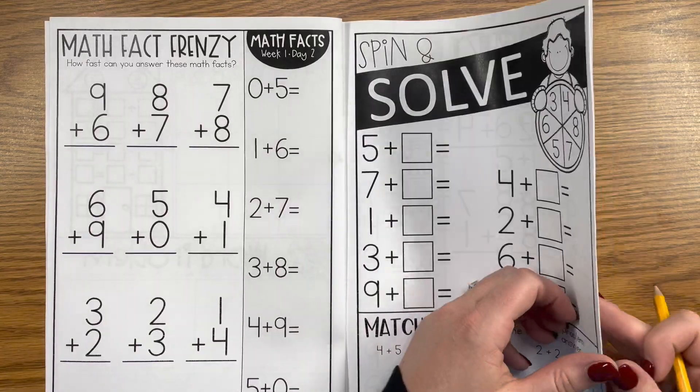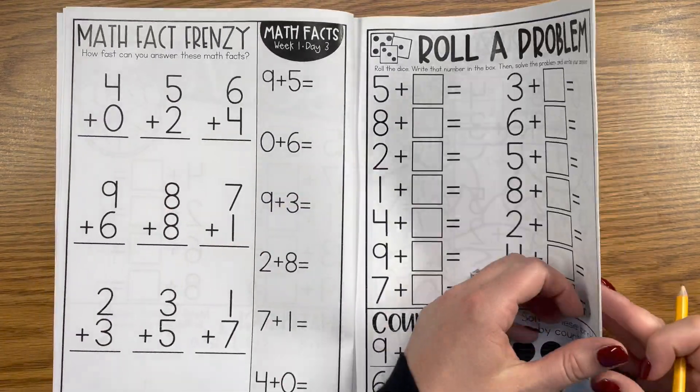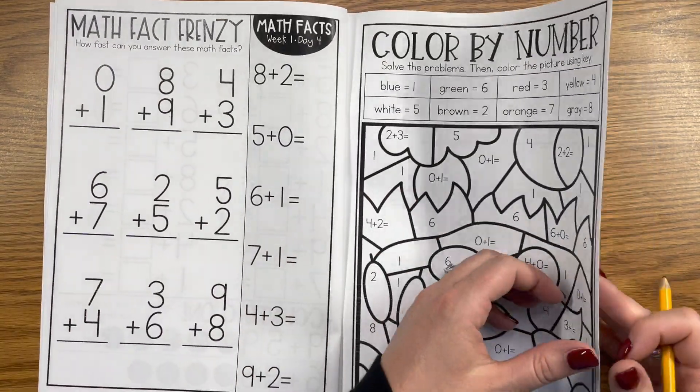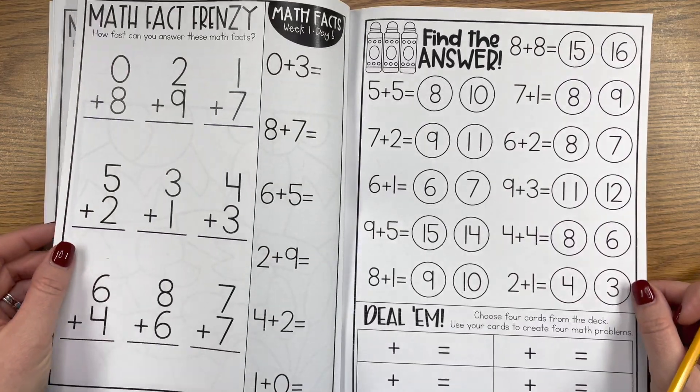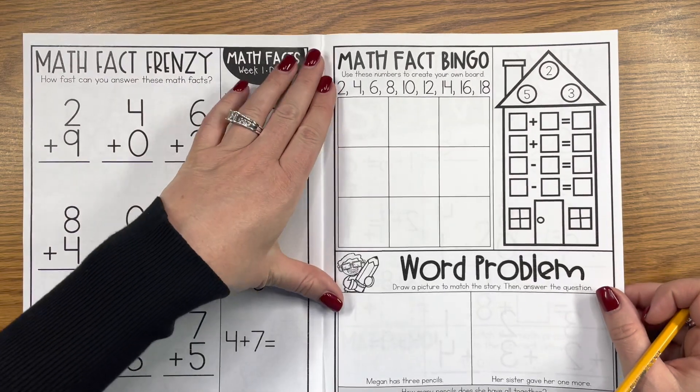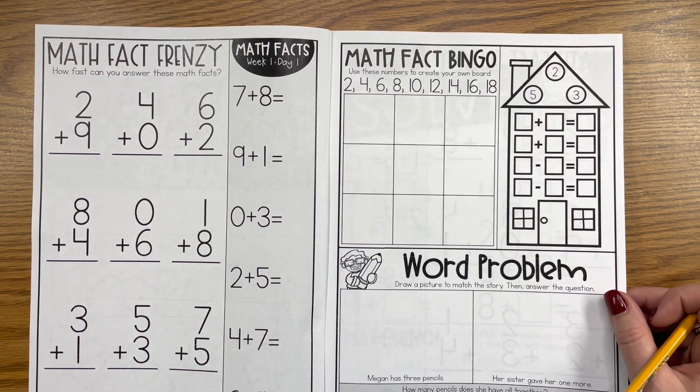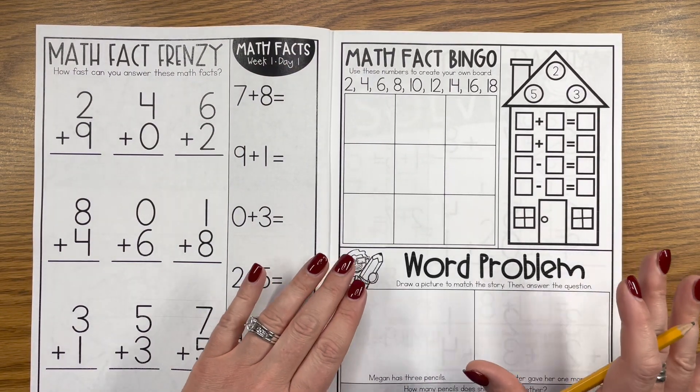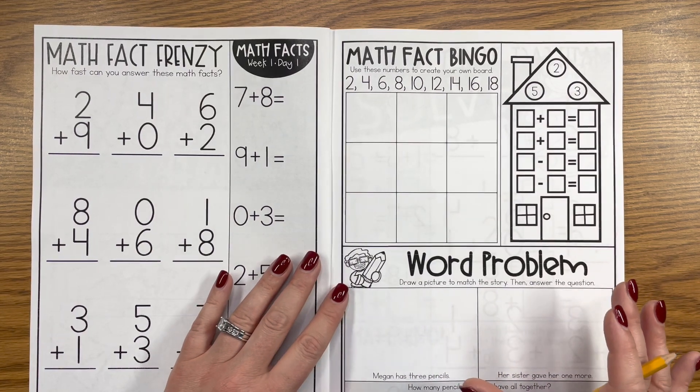As I flip through the book you'll see that really stays the same every day. That side of the page looks the same, so kids will be able to practice that skill using their hundreds chart or using their number line, whatever strategy you or your students prefer.